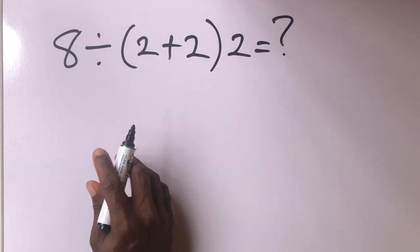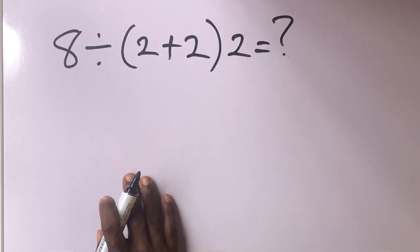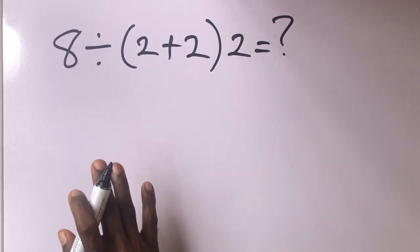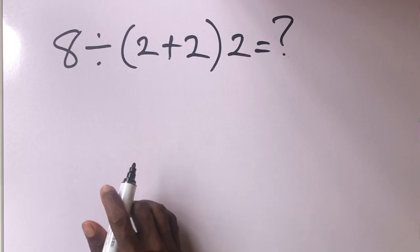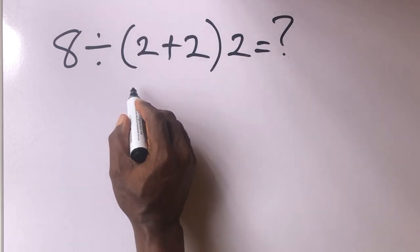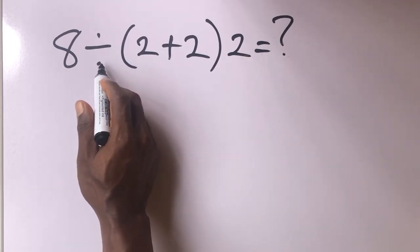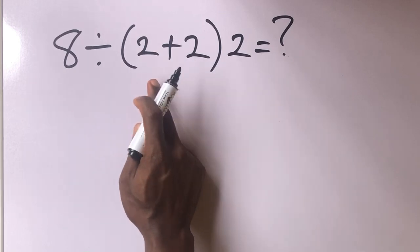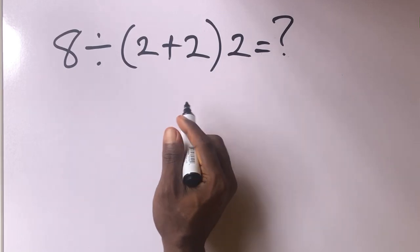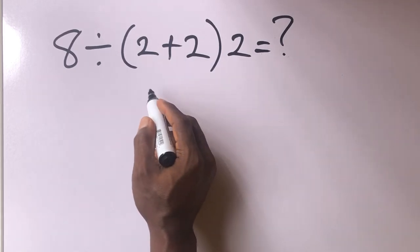Now this is a simple math problem for us to solve. There is a wrong method in which people solve this math problem. For example, you have 2 plus 2×8 divided by, in brackets, 2 plus 2, then times 2. What's the answer?